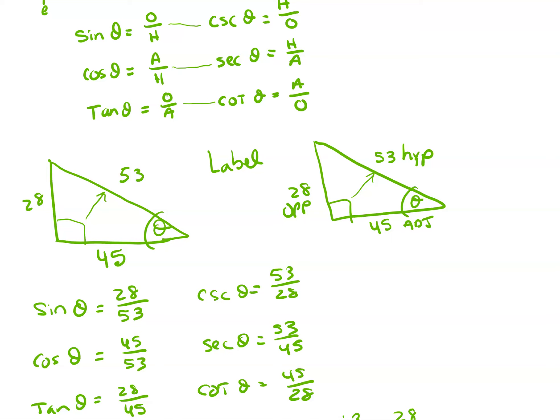And you always want to make sure to see if you can simplify these, but there's no number that goes into 28 and 53 or 45 and 53 to simplify. Line up your other functions: cosecant, secant, cotangent, and just flip these around. So 53 over 28, 53 over 45, and this one will be 45 over 28, and that's it.